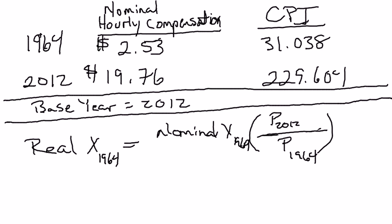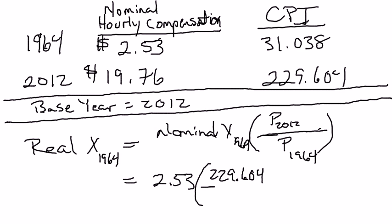This is just one equation with four unknowns — if you know any three, you can calculate the fourth. Nominal wages in 1964 are $2.53. The price level in 2012 is 229.604, meaning prices are about 129.6% higher in 2012 than during the 1982–84 base period. The price level in 1964 was 31.038, meaning the average price of a fixed basket of goods was actually cheaper in 1964 than in the 1982–84 period. Working through the calculation, the real wage in 1964 was $18.72.